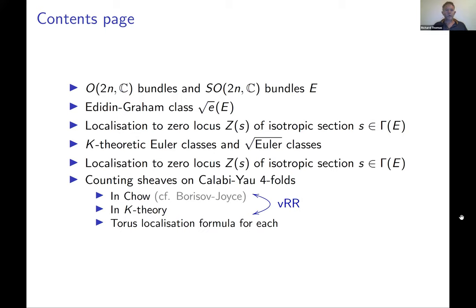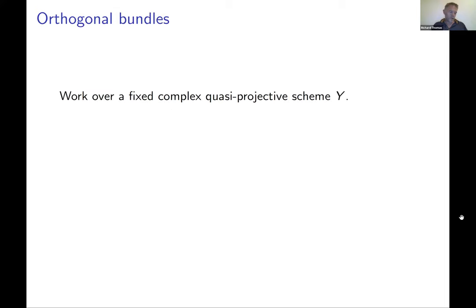One thing to clarify: don't confuse the sheaves on Calabi-Yaus with the orthogonal bundles. The sheaves I'm counting on Calabi-Yaus are not orthogonal bundles. It's the local model of the moduli space of stable sheaves on the Calabi-Yau fourfold that I'll describe in terms of an auxiliary orthogonal bundle. Orthogonal bundles come up in moduli of bundles on Calabi-Yau fourfolds due to Serre duality.